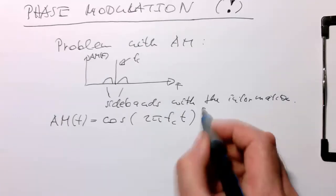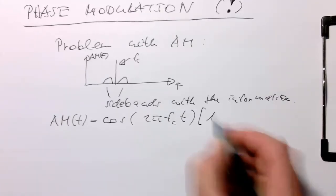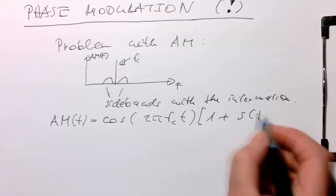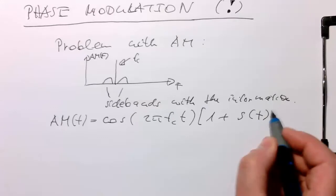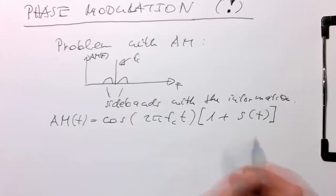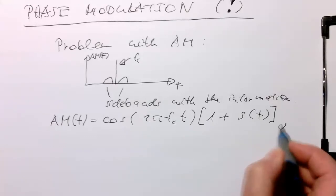And then we multiply this with 1 plus our symbol stream S of T. And I just secretly omit here the modulation index just to make it look easier. So with alpha equals 1.